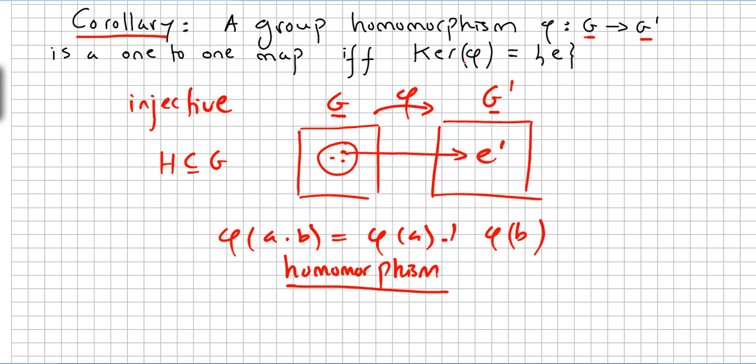So if the kernel of Φ, meaning if this set here has only one element here, and that element is E, if the kernel of Φ is only the element E, then we know that Φ is an injective map, and we know that the homomorphism is one to one.